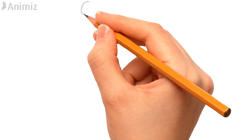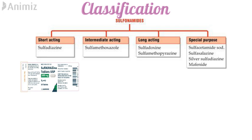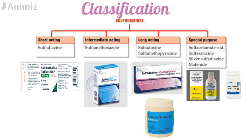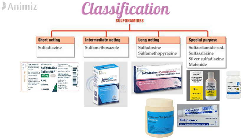Now let's see the classification of different sulfonamides used nowadays. We have short-acting sulfadiazine, intermediate-acting sulfamethoxazole, long-acting sulfadoxine and sulfamethoxypyridazine, and special-purpose agents: sulfacetamide sodium, used for eye infections; sulfasalazine, used for ulcerative colitis and rheumatoid arthritis; silver sulfadiazine, used in burns; and mafenide, also used in burns.